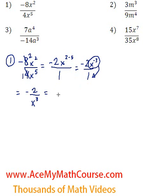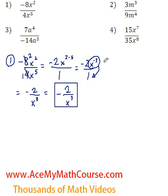Let me just rewrite this to make it look somewhat neater. There we go — that is the answer to question 1. How about question 2? So we have 3m cubed over 9m to the power of 4.